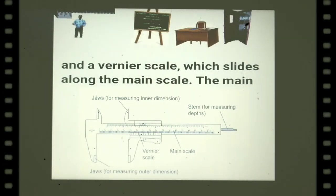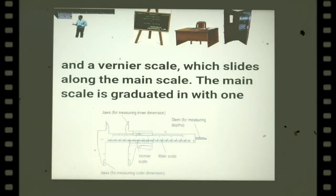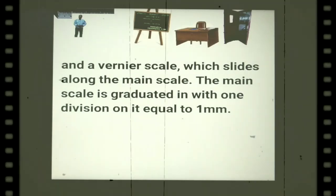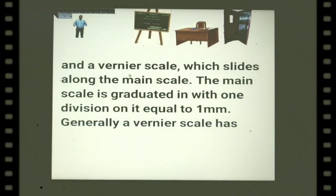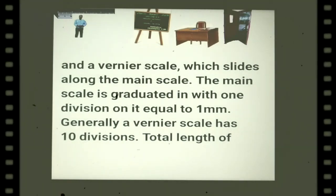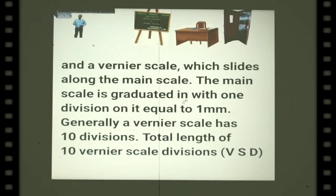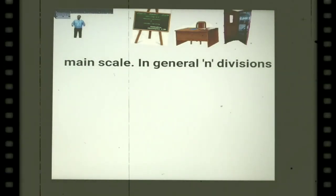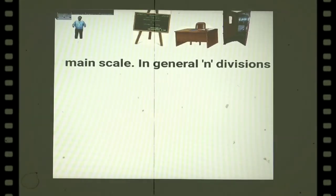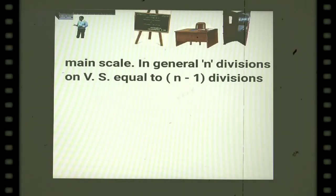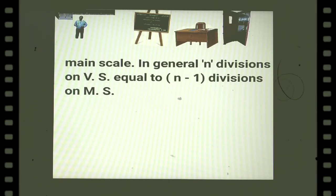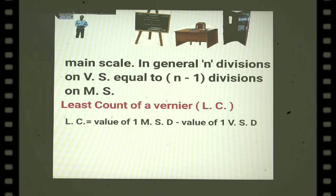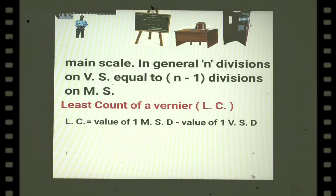The vernier scale slides on the main scale. The main scale is graduated with one division equal to one millimeter. Generally a vernier scale has 10 divisions. The total length of 10 vernier scale divisions equals the value of nine divisions of the main scale. In general, N divisions on the vernier scale equal N minus one divisions on the main scale.